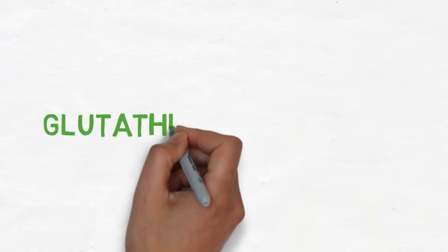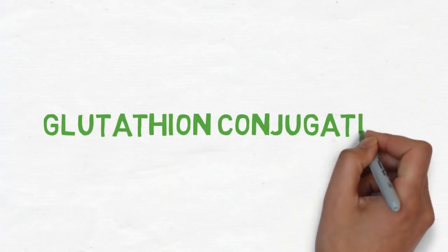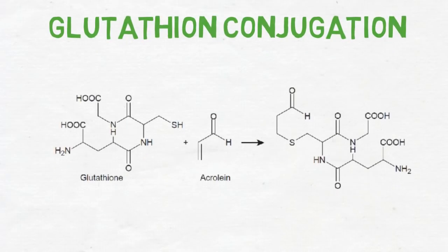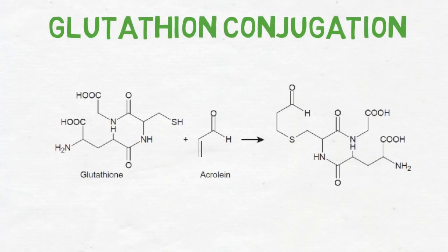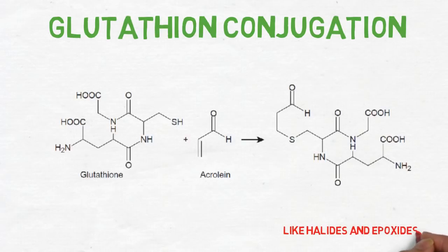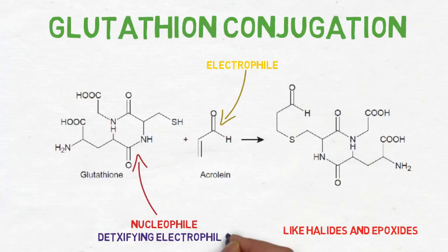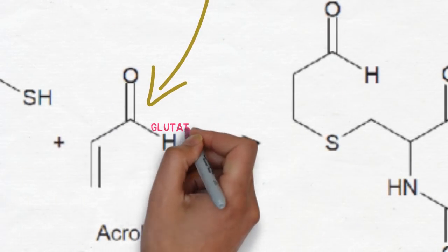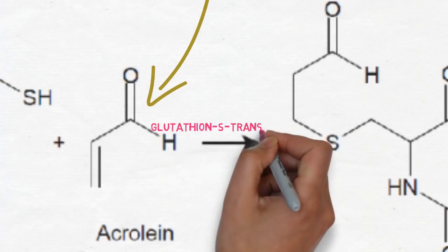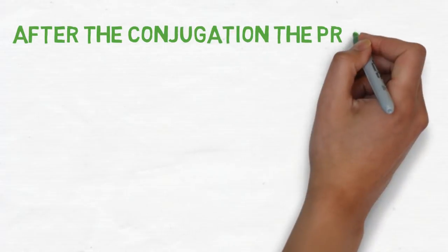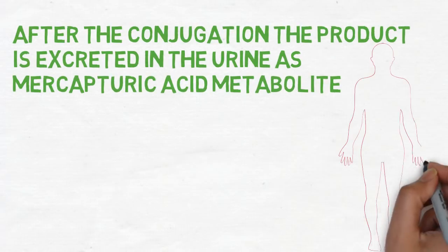Another popular reaction is glutathione conjugation, which results from the addition of a glutathione molecule to an electrophilic substrate. Being a nucleophile, glutathione generally acts to detoxify electrophiles. Glutathione S-transferase is the enzyme responsible for the reaction of glutathione with electrophiles like epoxides and halides. After conjugation, the product is excreted as mercapturic acid in the urine.